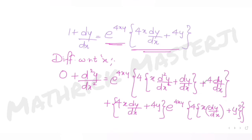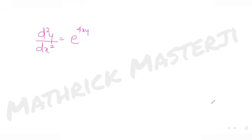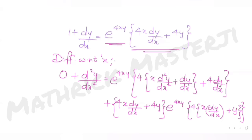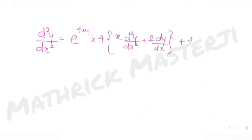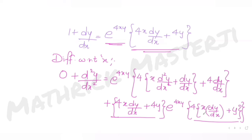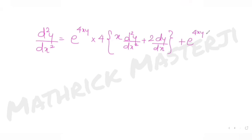Simplifying, d²y/dx² = e^(4xy) · 4·(x·(d²y/dx²) + 2·(dy/dx)) plus e^(4xy) · (4x·(dy/dx) + 4y)². So we have the full expression for d²y/dx².